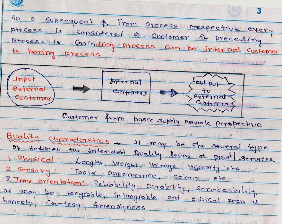The characteristics of quality are the attributes that define the internal quality level of a product or service. Quality characteristics may be physical, sensory, or time-oriented. Physical characteristics include length, weight, voltage, and viscosity — dimensions that tell us the quality of a product.